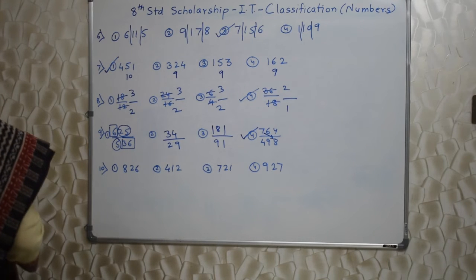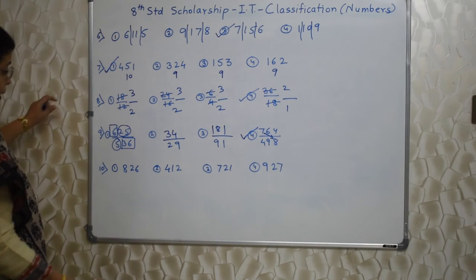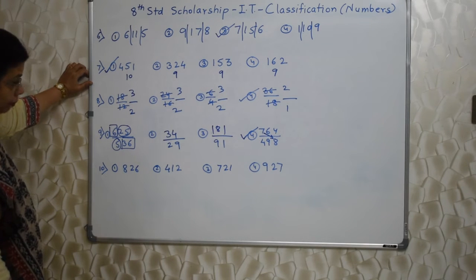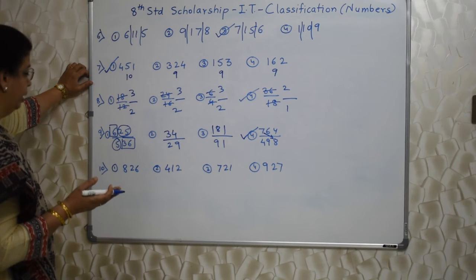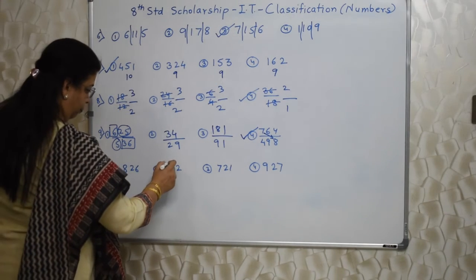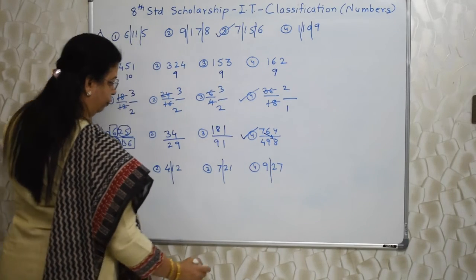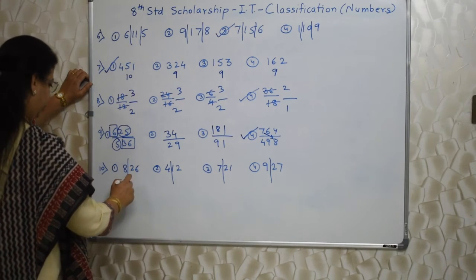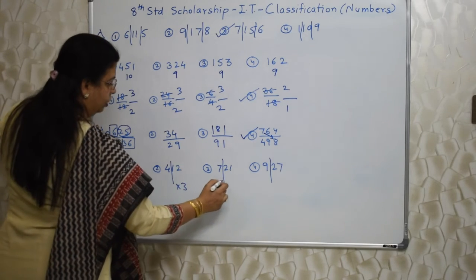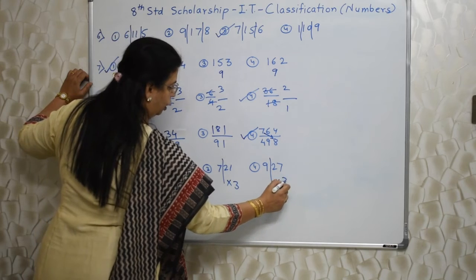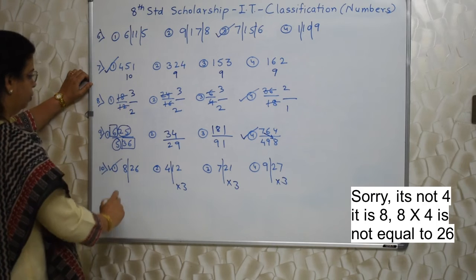Next one, which is the last sum. Observe the numbers again. Three digits. So we might have to break them. How to break them? See, breaking the number should help us. Otherwise, it doesn't make any sense. See, I can see 4 is a factor of 12. 7 is a factor of 21. 9 is a factor of 27. But here there is something wrong. 4 into 3 is 12. 7 into 3 is 21. 9 into 3 is 27. But here 4 into 3 is not 26. So this one is odd.